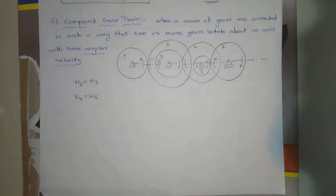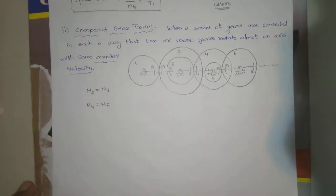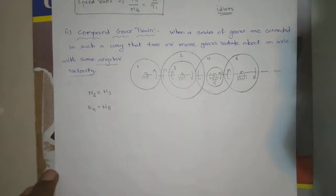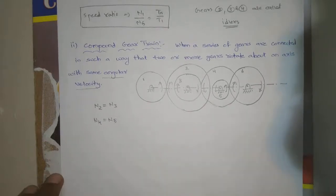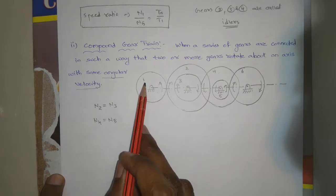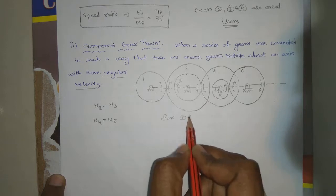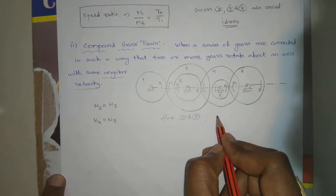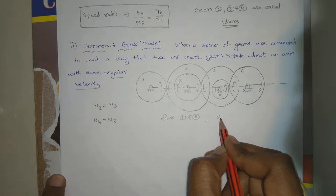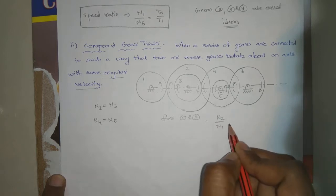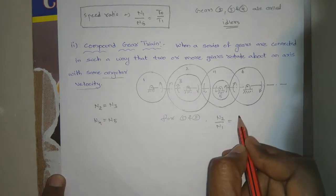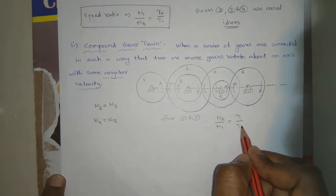Just like a simple gear train, if you want to find out the train value of this compound gear train, we have similar relations. Let us consider gear one and gear two — for gears 1 and 2 we have the relation: n2 by n1 is equal to t1 by t2.